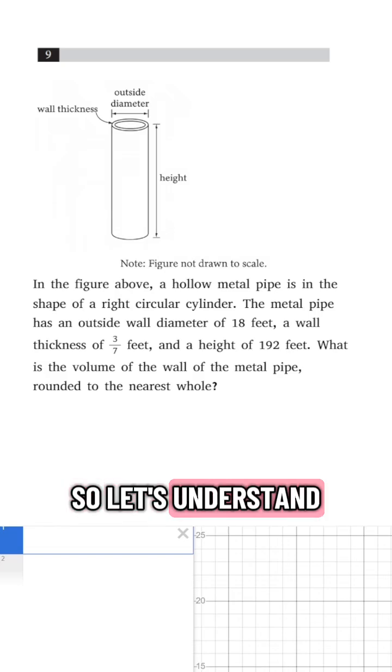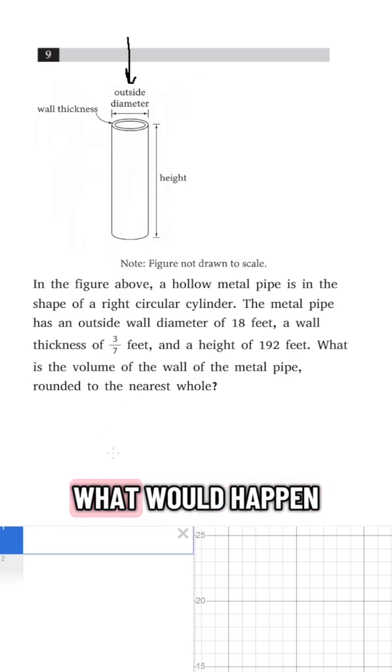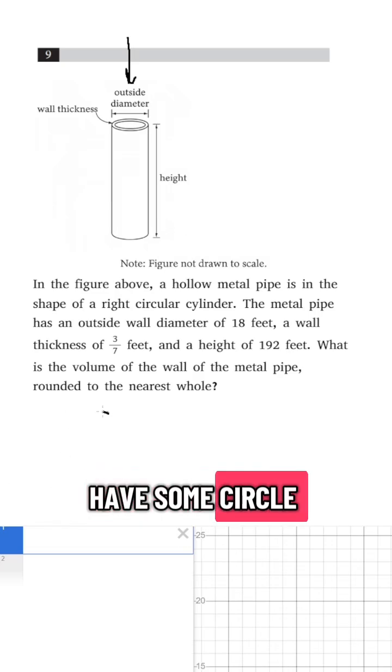So, let's understand this conceptually. Let's say I wanted to look into the pipe from the top down. What would happen is I would have some circle, and then I would have some outer circle.